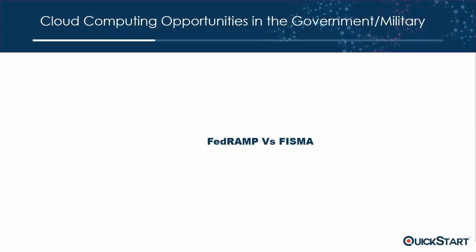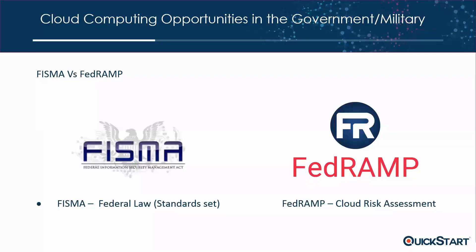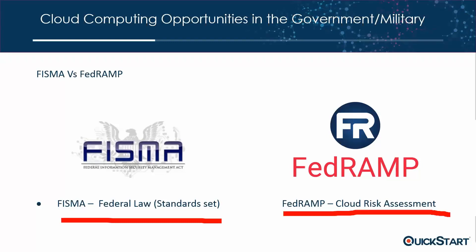So what is FedRAMP and what is FISMA? We want to simply think of FISMA as a federal law — a standard that's been set, signed by the executive branch. It was signed during Obama's first term. It's a law that mandated federal government agencies to get security-enabled. Whereas FedRAMP is more of a cloud risk assessment or risk management approach that is built off of FISMA.